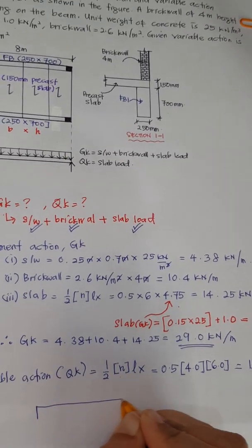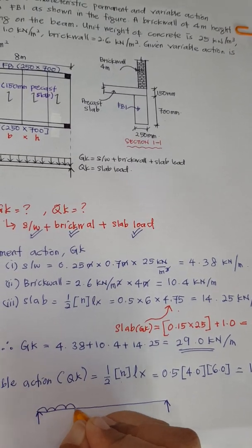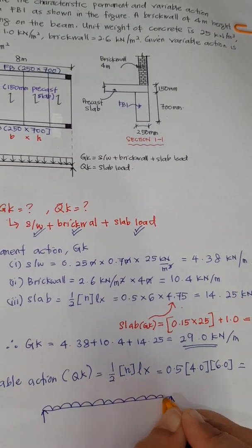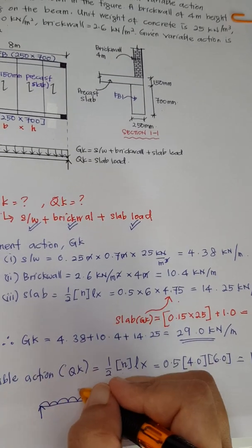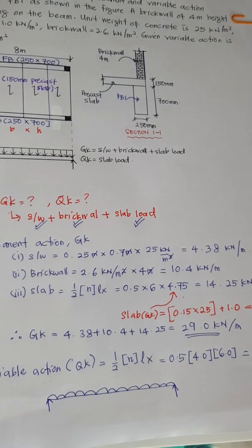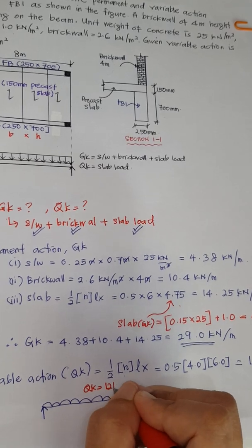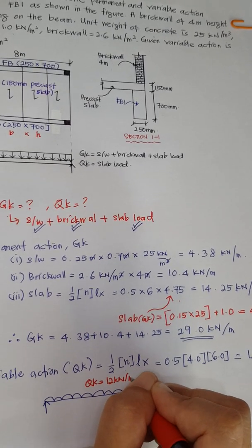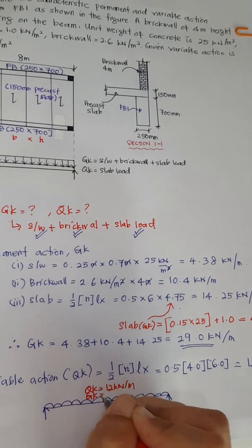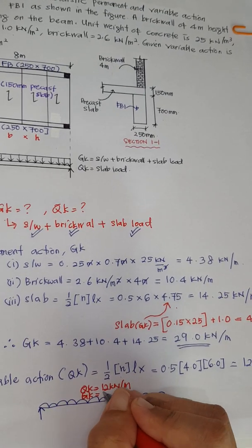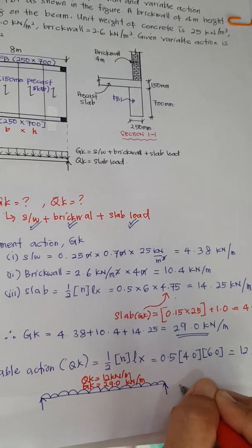This is the idealized loading on the beam. The final answers are: GK equals 29.0 kilonewton per meter, and QK equals 12 kilonewton per meter.